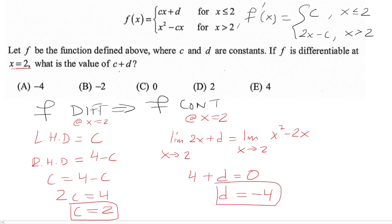Now we're interested in finding the value of c plus d. Well, c plus d is 2 plus negative 4, which is negative 2. So the answer is b.